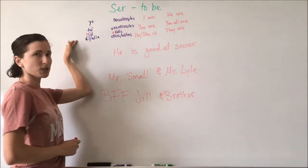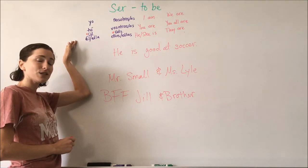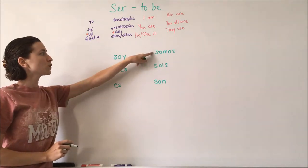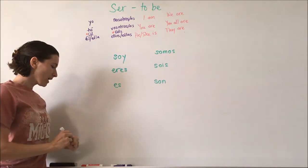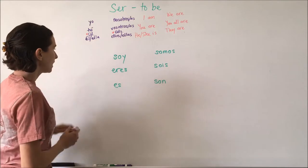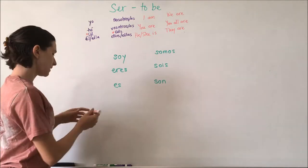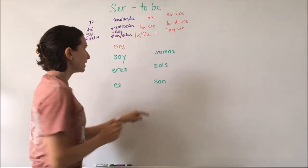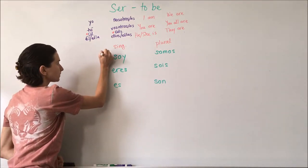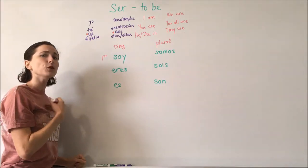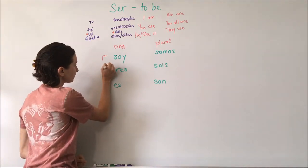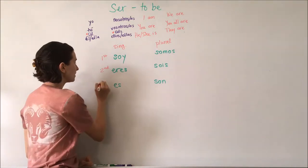Now that we've gone over the subject pronouns, let's go over the conjugations of ser: soy, eres, es, somos, sois, son. These conjugations correspond to these subjects here. In this column we have singular, and in the second column we have plural. This first line is the first person — that's the I perspective or the we perspective. The second line is the second person. And the third line right here is the third person.